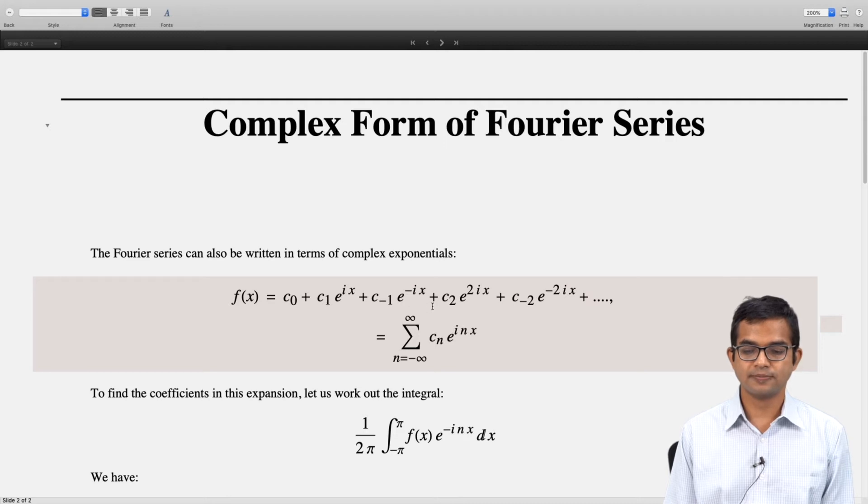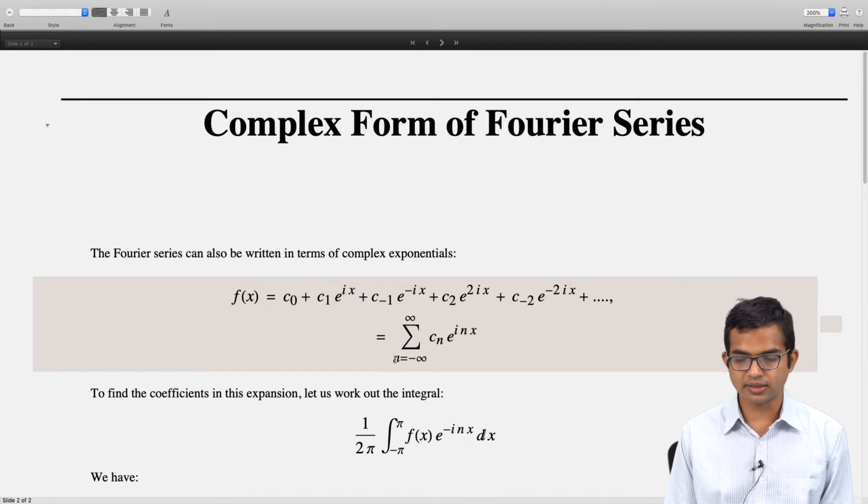Now you allow for this index to take negative values as well. In other words, we are writing this as a summation where n takes all integer values from minus infinity to plus infinity: cₙe^(inx).